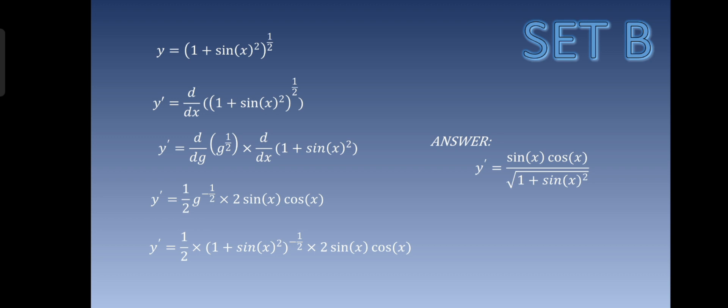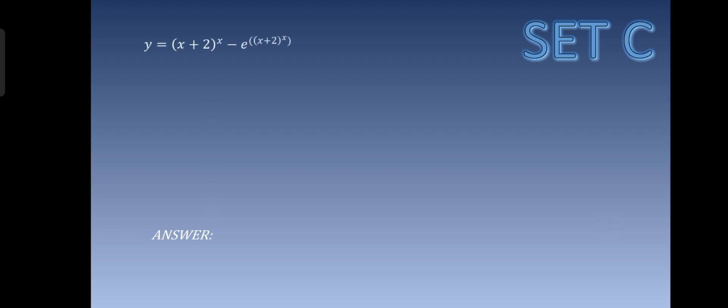Set B is done. Now we go to Set C. The given for Set C is y is equal to x plus 2 raised to x, minus e raised to x plus 2 raised to x.